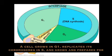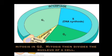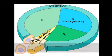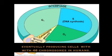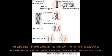A cell grows in G1, replicates its chromosomes in S, and grows and prepares for mitosis in G2. Mitosis then divides the nucleus of a cell, eventually producing cells with 46 chromosomes in humans.